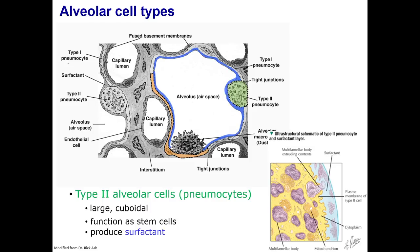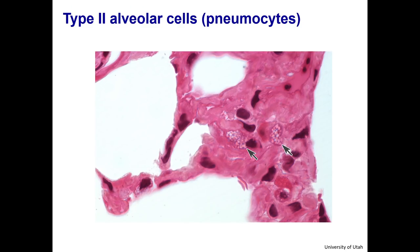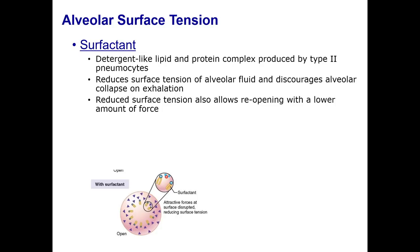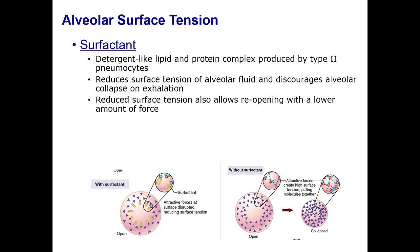The cytoplasm of type 2 cells contains lamellar bodies that have secretory granules containing pulmonary surfactant. Surfactant is released by exocytosis and spreads over a thin layer of fluid to coat the alveolar surface. You can easily see the lamellar bodies containing surfactant in the type 2 alveolar cells shown in this H&E stained section. Surfactant is a detergent-type lipid that functions to reduce surface tension at the air-fluid interface, reducing the tendency for alveoli to collapse at the end of expiration. With surfactant, attractive forces at the surface are disrupted, thus reducing surface tension. But when surfactant is lacking, the molecules are attracted to one another and are pulled together.